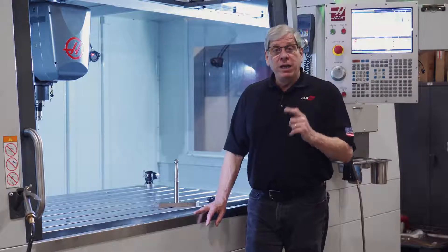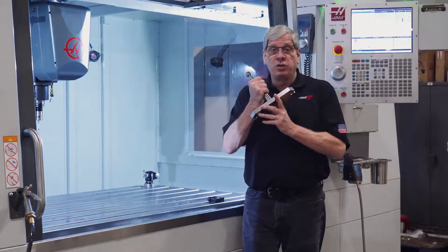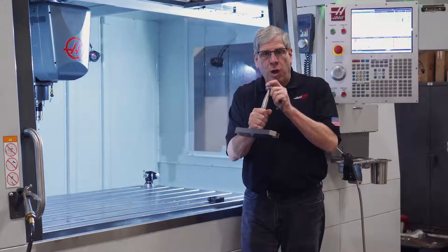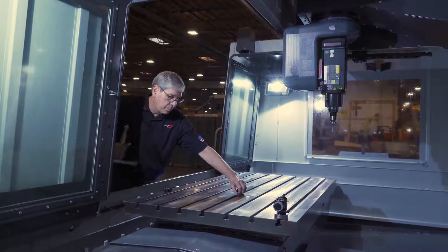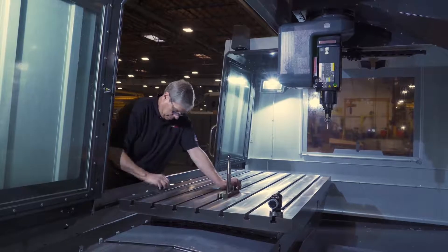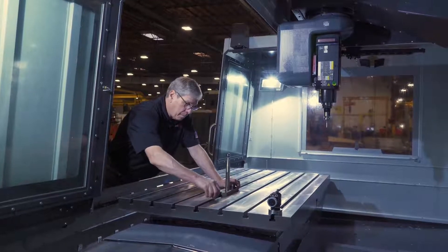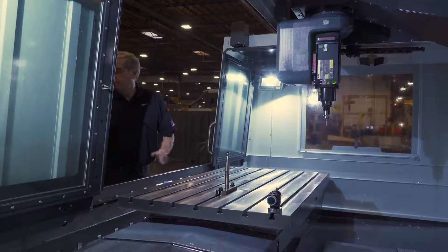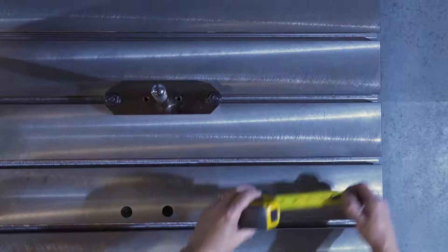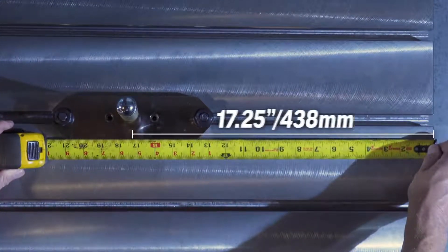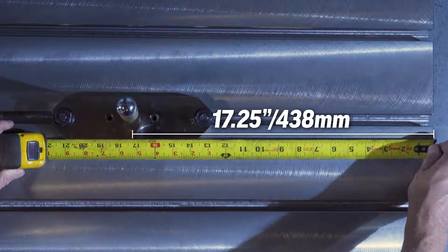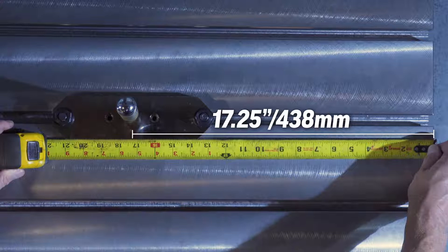Now we need to attach the rotary axis calibration tool, commonly known as a tooling ball, to the table. On VR series machines, leave the slotted base on the rotary axis calibration tool and use T-nuts and bolts to clamp it to the table using the center T-slot of the machine. Line it up with the base parallel to the X-axis, then measure 17.25 inches or 438 millimeters from the right edge of the table to the center of the tooling ball stem and tighten the screws.